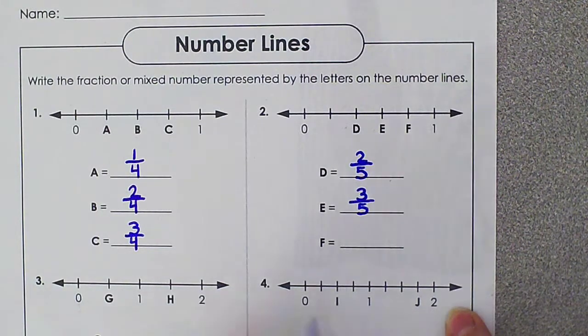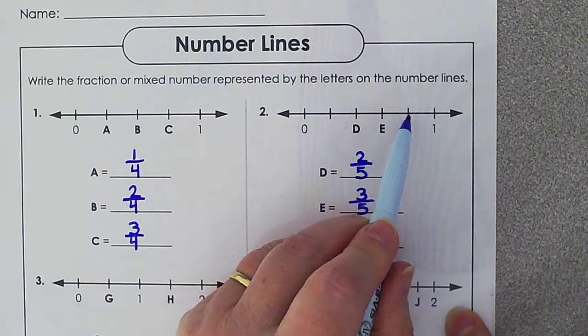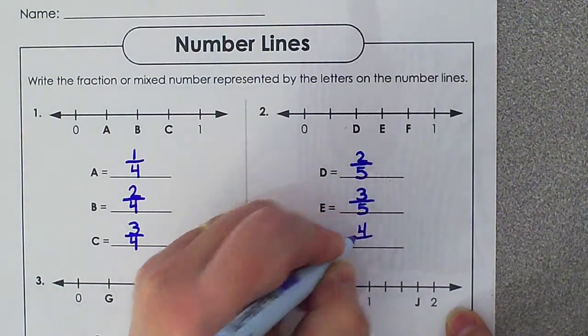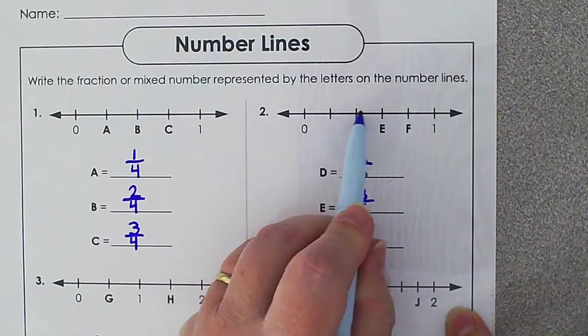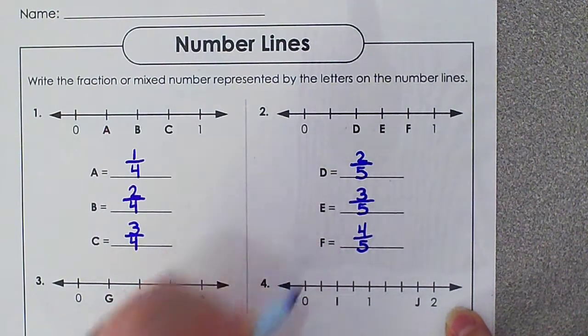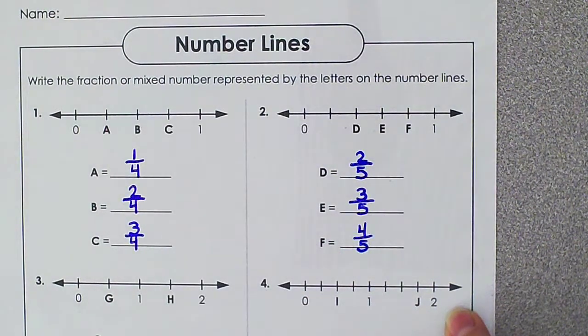Point F is 1, 2, 3, 4 marks past 0. But there are 1, 2, 3, 4, 5 marks in all, or pieces in all. So our fraction for F is 4 fifths.